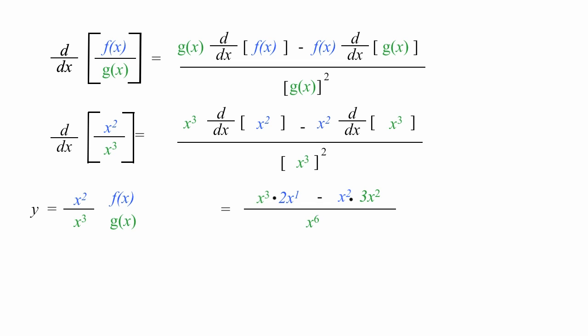Now I have x cubed times 2 to the x to the first power, which is 2 times x to the fourth power. So now I take x squared times 3 times x squared, which gives me negative 3 times x to the fourth power, all this divided by x to the sixth power.